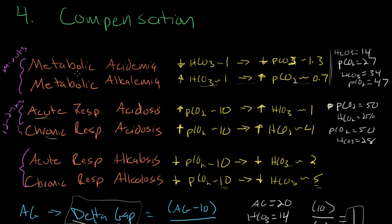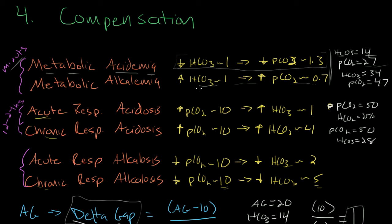Let's take the example of a metabolic acidosis. In metabolic acidemia, you have a change in your bicarbonate, and within minutes I would expect a compensatory change in your CO2 value. For every one-unit decrease in your bicarbonate in a metabolic acidosis, you would have a compensatory decrease of about 1.3 in your PCO2. So if a patient has a bicarbonate of 14 — that's about 10 less than 24, the normal value — I would expect a decrease in CO2 of about 13, giving a CO2 of about 27. You can use this chart to go through calculations for metabolic alkalemia, and similarly for respiratory acidosis and alkalosis.